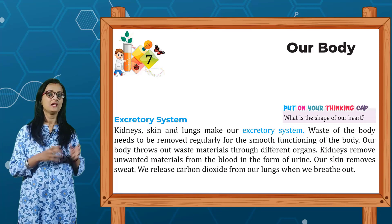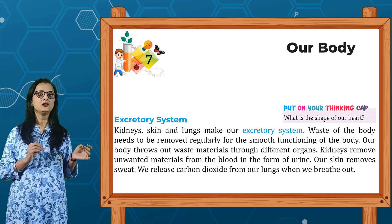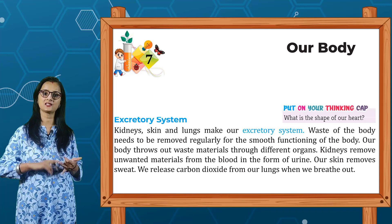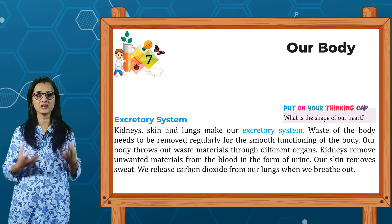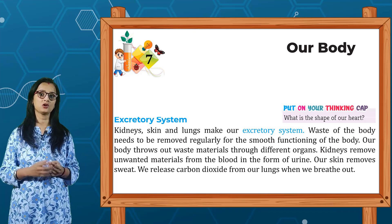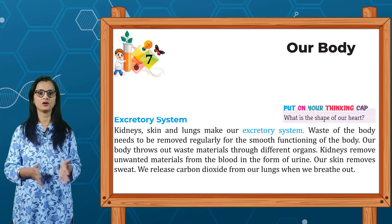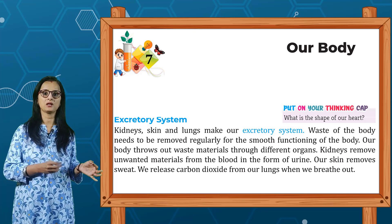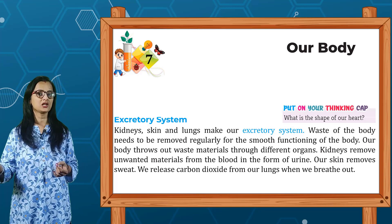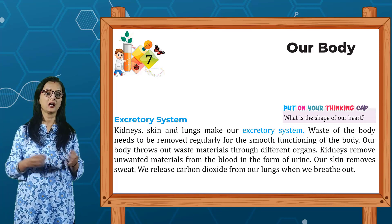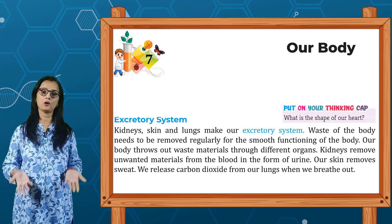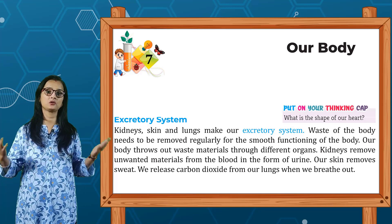Next is the excretory system. Kidney, skin and lungs make our excretory system. Waste of the body needs to be removed regularly for the smooth functioning of the body. Kidney removes unwanted materials from the blood in the form of urine. Our skin removes sweat. We release carbon dioxide from our lungs when we breathe out, as carbon dioxide is not needed by our body.